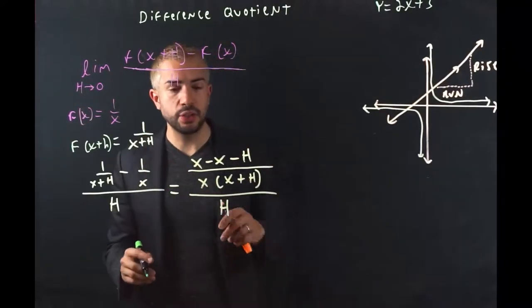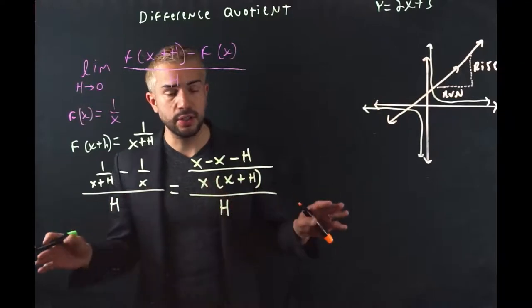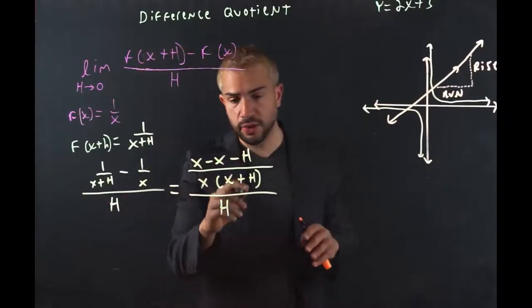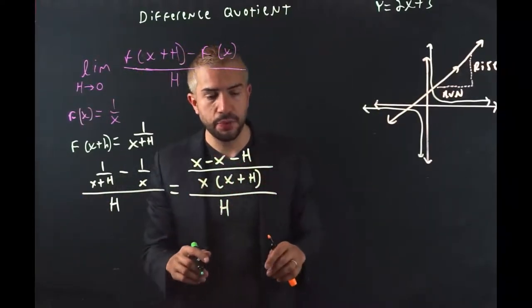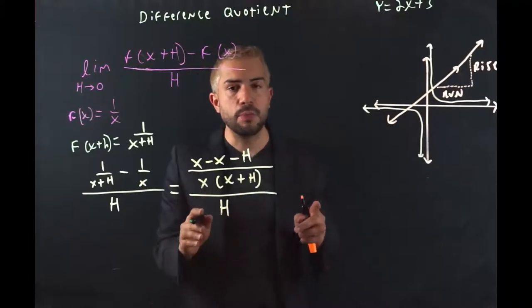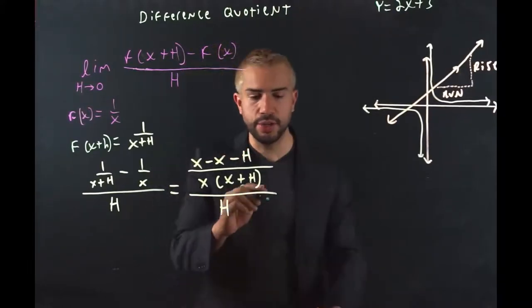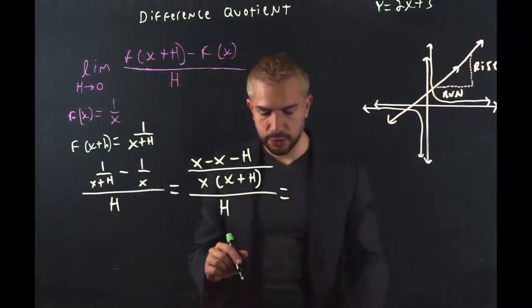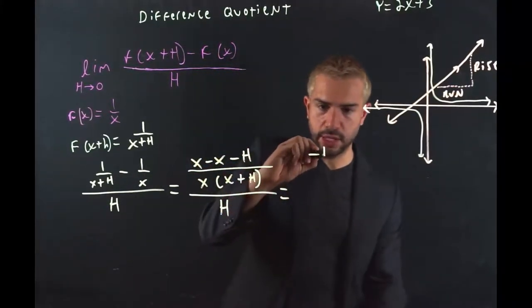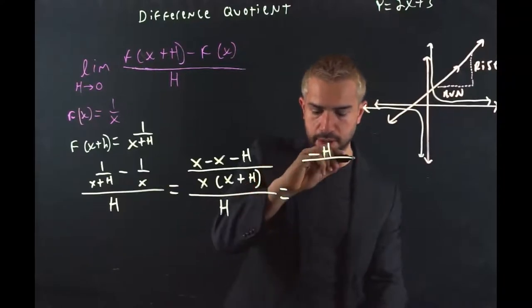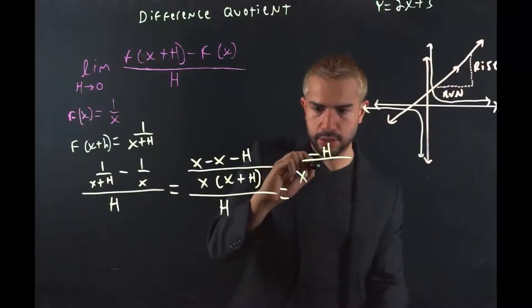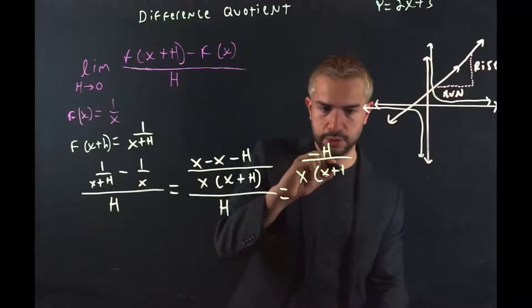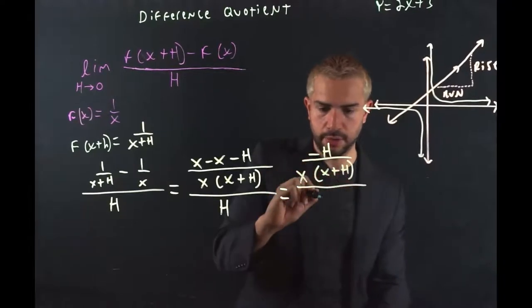It's still a complex fraction. x minus x cancels. So it's really negative h divided by this over h. When you divide by a fraction, remember, you got to multiply by its reciprocal. Let's take care of these. And once you do, you will get this negative h divided by the same LCD that we found earlier, x times (x + h), all of that divided by h.